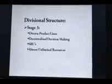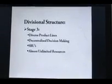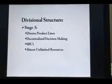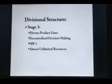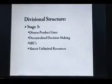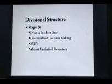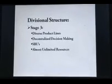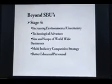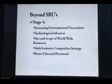Stage 3 is divisional structure. Diverse product lines are there, therefore it has decentralized decision making and unlimited resources. It is at the SBU level of strategic organizational structure — strategic business units are working.